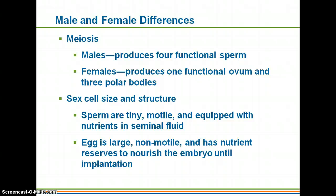In meiosis: males produce four functional sperm, while females produce one functional ovum and three polar bodies. Regarding sex cell size and structure: sperm are the smallest cells in the human body — they are tiny, they are motile because they're the only ones with a flagella, and they have nutrients and seminal fluid to help keep them alive. The egg is the largest cell in the human body. It is non-motile — even though it gets moved through the female reproductive tract, it cannot move on its own — and it has nutrient reserves to nourish the embryo until implantation.